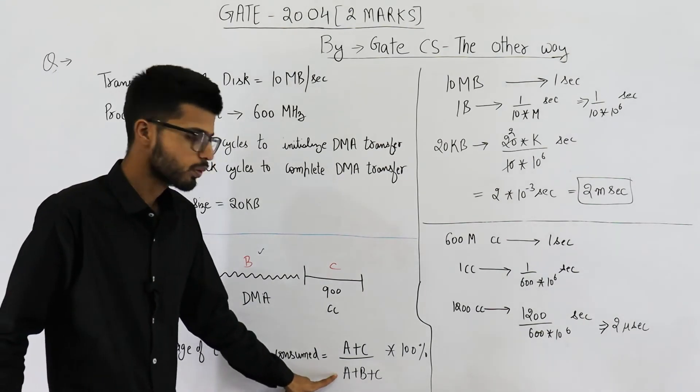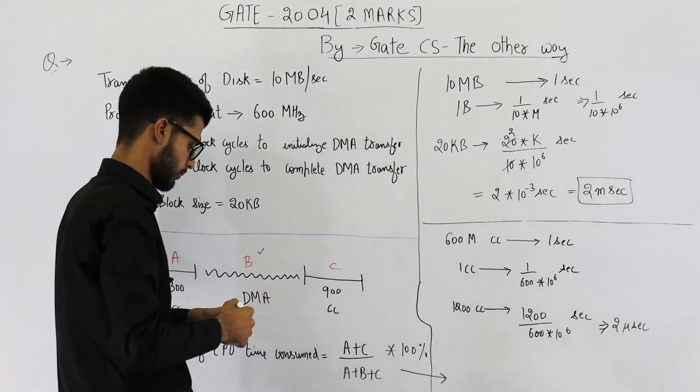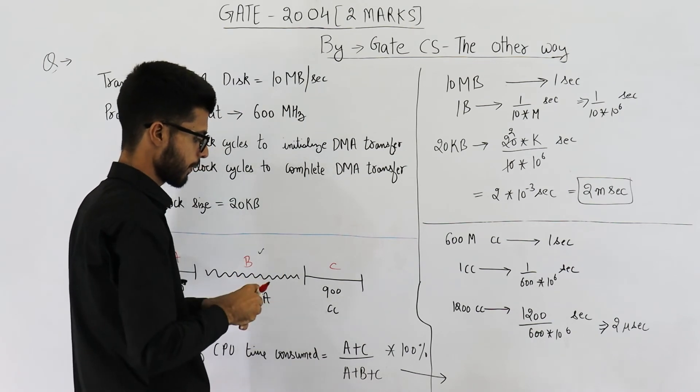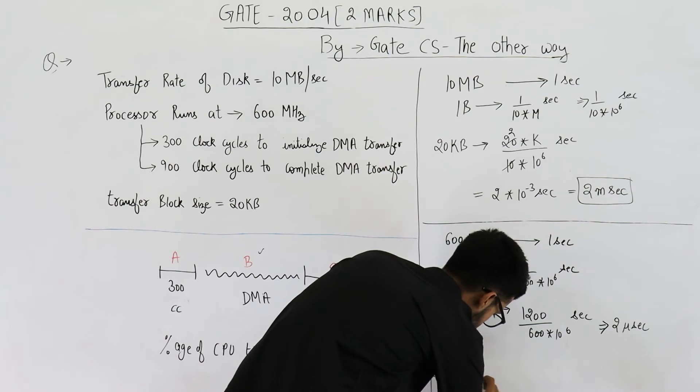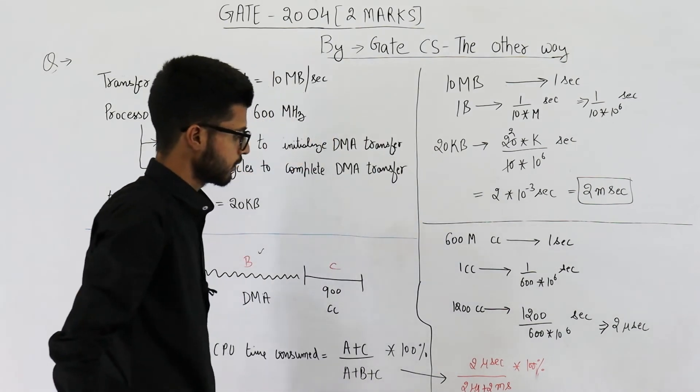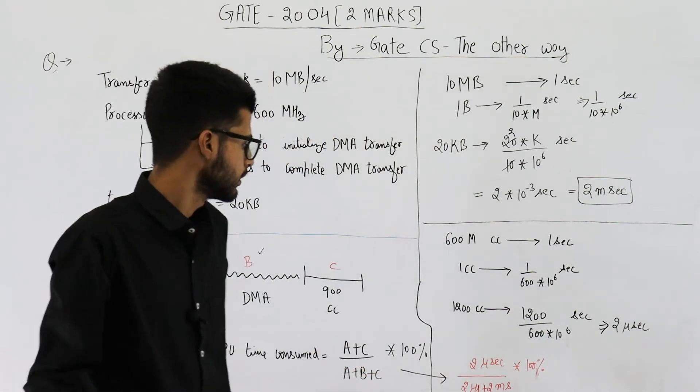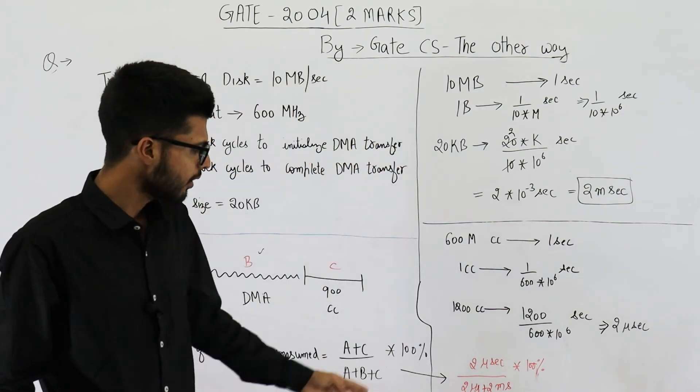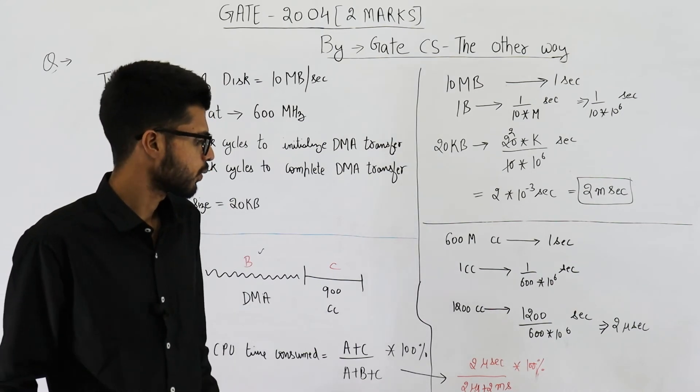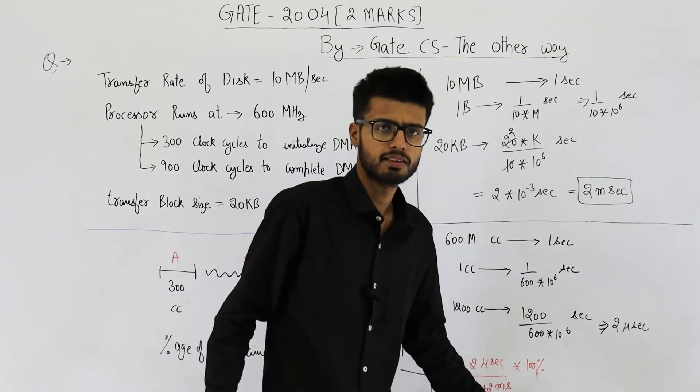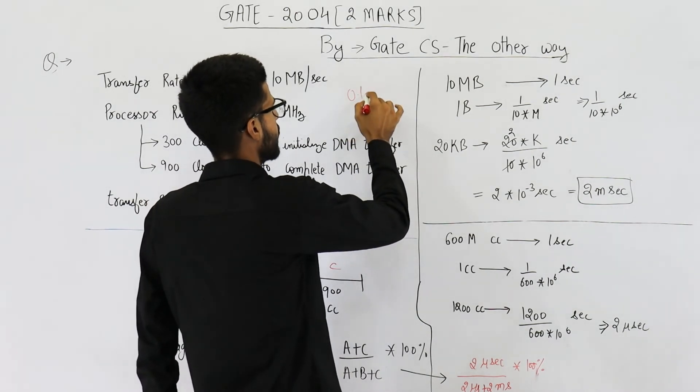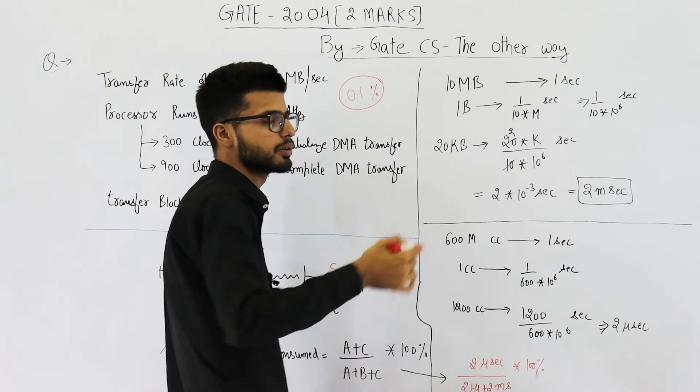And the time spent by DMA is 2 milliseconds. So the total time will be 2 micro plus 2 milli. The percentage will be, now this will be around 0.1 percent. If you neglect this value, this will be around 0.1 percent. Also you can consider it if you want. Still it will be around 0.1 percent. Because 2 microseconds is very small as compared to 2 milliseconds. So your answer is 0.1 percent of time of CPU is wasted for this transfer.